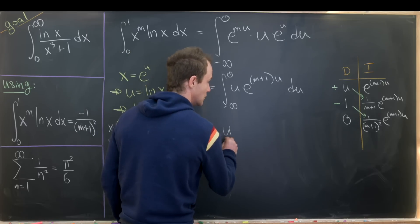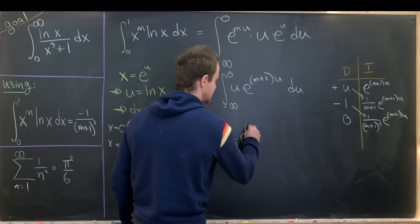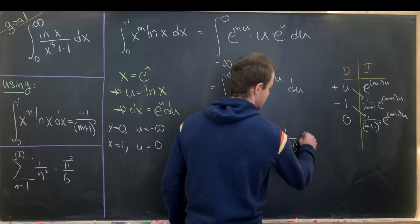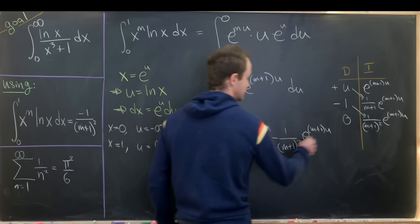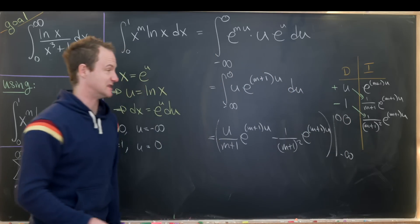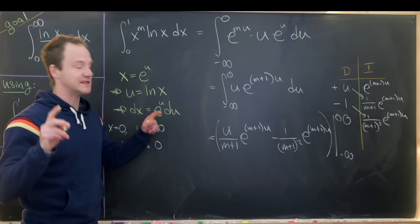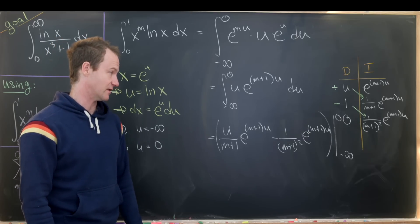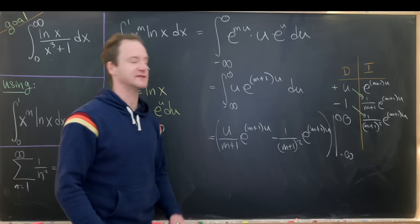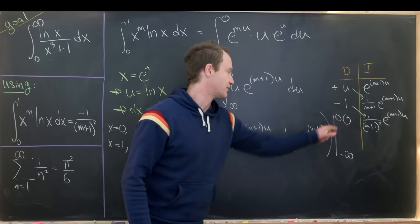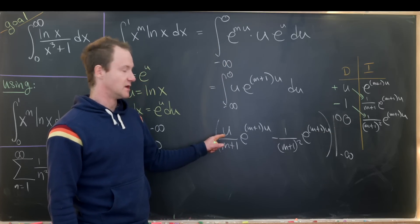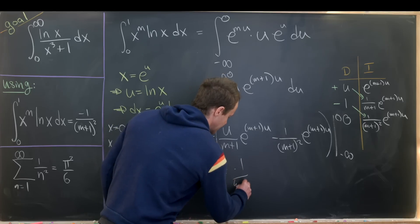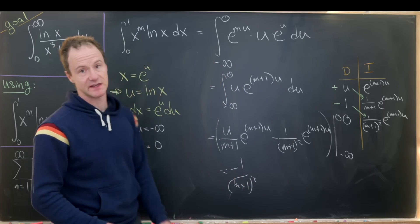So we get u over m plus 1 times e to the m plus 1 times u, minus 1 over m plus 1 squared times e to the m plus 1 times u, evaluated from minus infinity to 0. Plugging minus infinity in gives 0 for both terms because of the e to the minus infinity factor. When we plug in 0, u evaluated at 0 is 0 so the first term vanishes, and the second term gives minus 1 over m plus 1 squared — which was the final answer we wanted. So we've derived this identity and are ready to jump into the main goal.